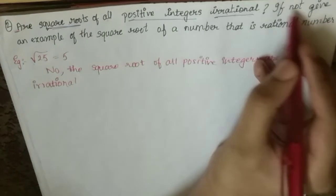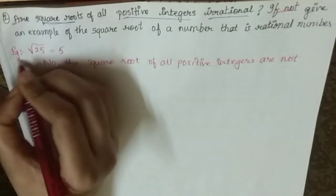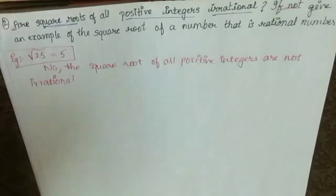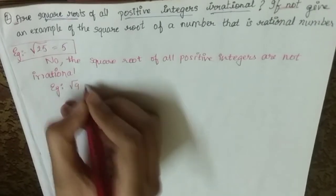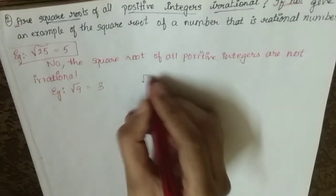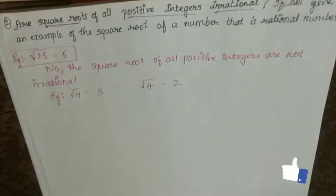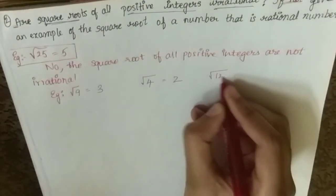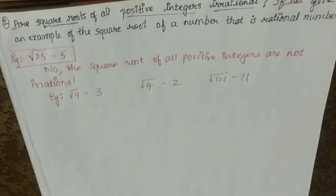So they have asked us to give some examples. I am going to give: square root of 9 is 3, square root of 4 is 2, square root of 121 is 11. You can have many examples. You can write some 3 examples, and your solution is done.